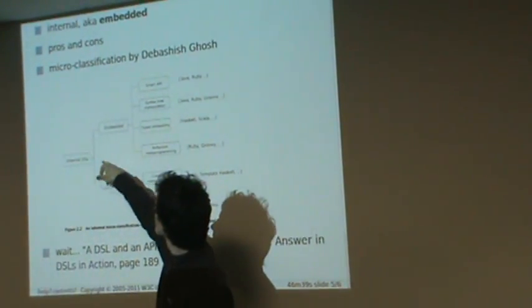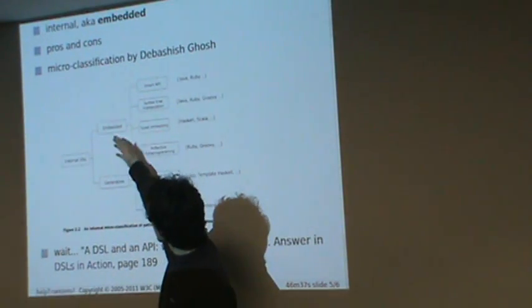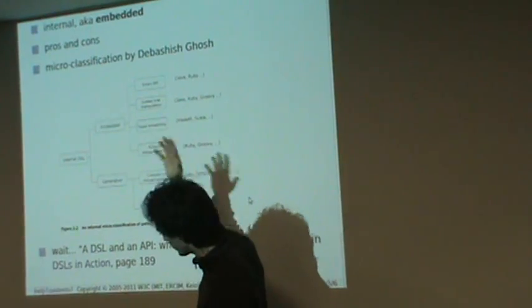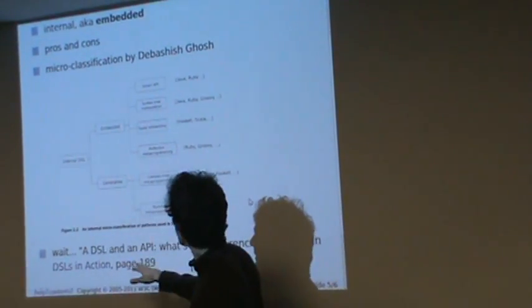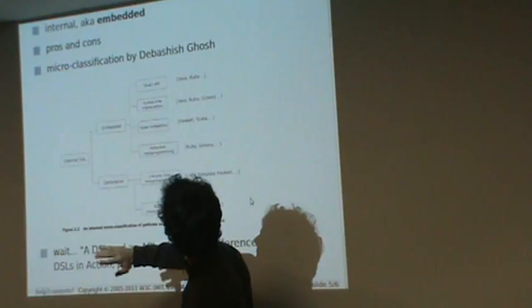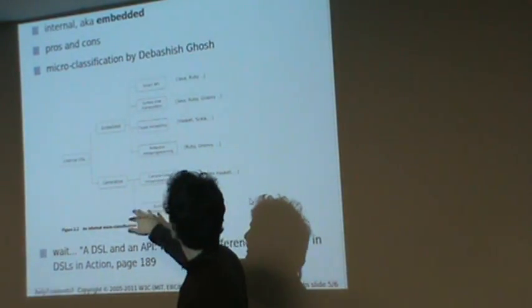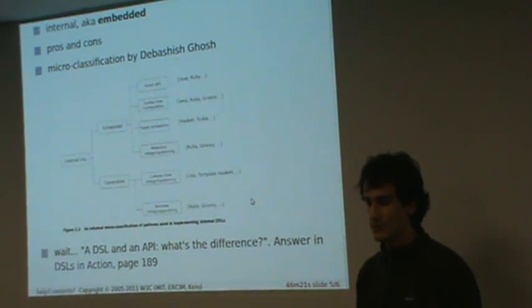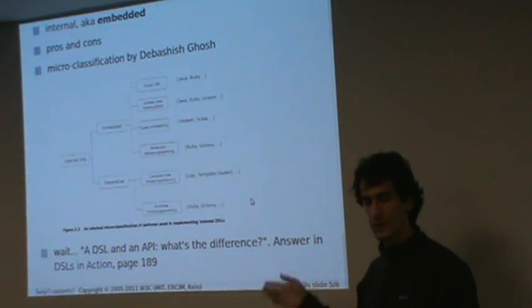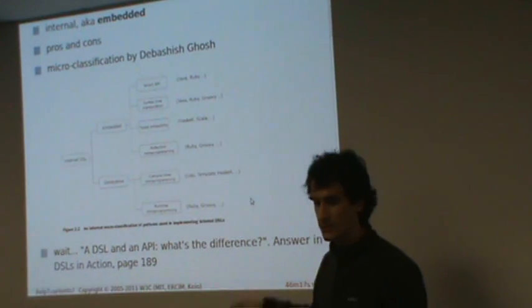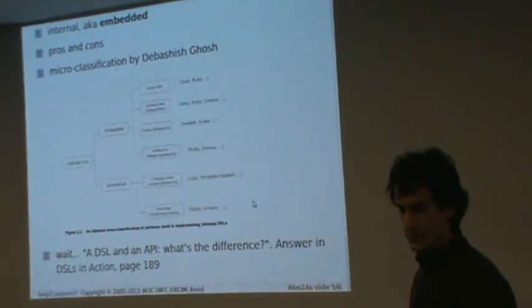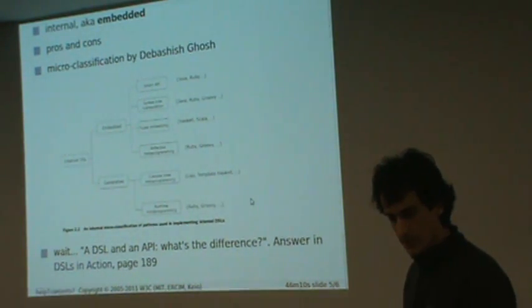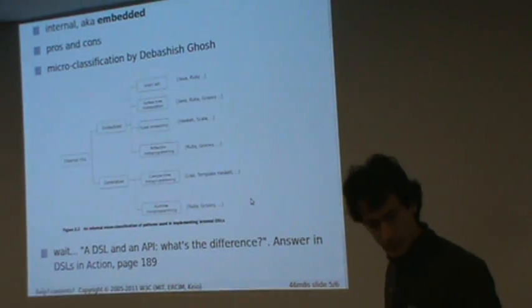You see you have the first family — this is the embedded internal DSL. You have the internal DSL. And the generative part, basically we won't speak about that because in Scala we are statically typed, so we can do this kind of stuff at compile time. But this is not really part of Scala, so we're not really interested by that.